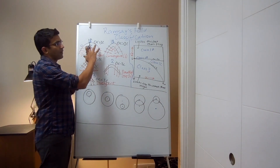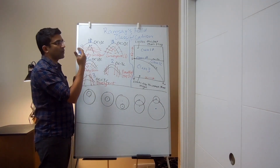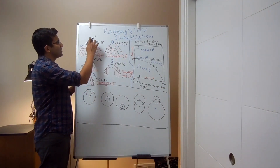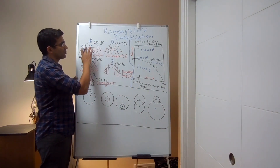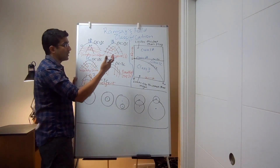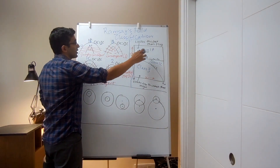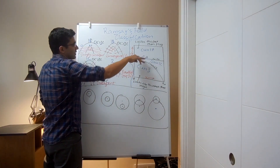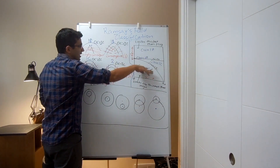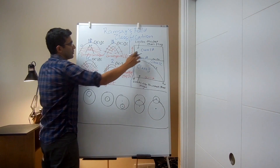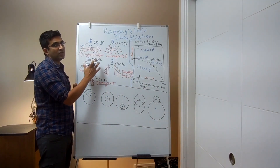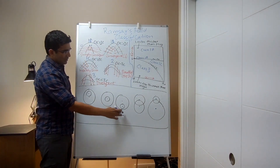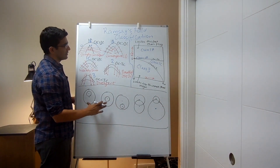For all folds belonging to class 1 - whether 1a, 1b, or 1c - the outer curvature is greater than the inner curvature. That is why we club them all as class 1, because of this convergent pattern of dip isogons as well as outer curvature being greater than inner curvature. They all have a t'alpha thickness less than 1.